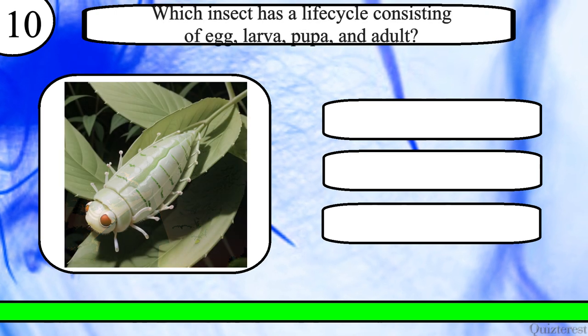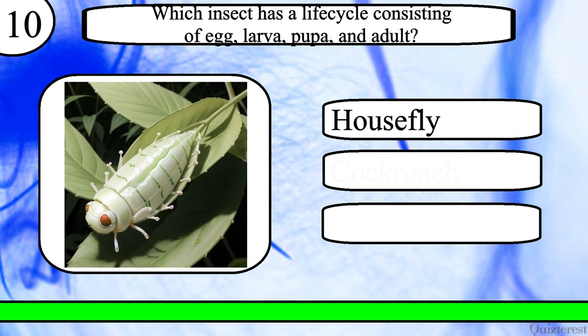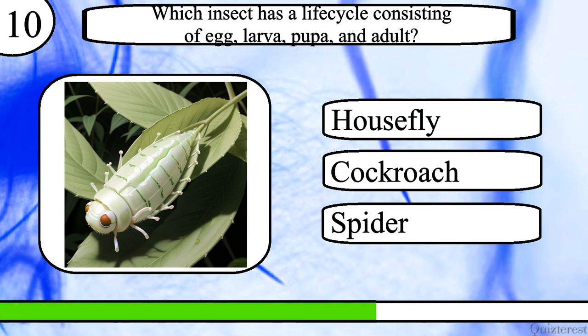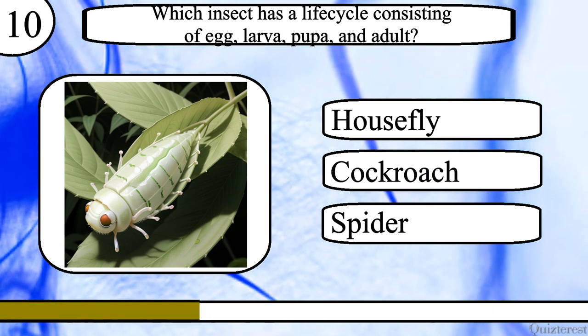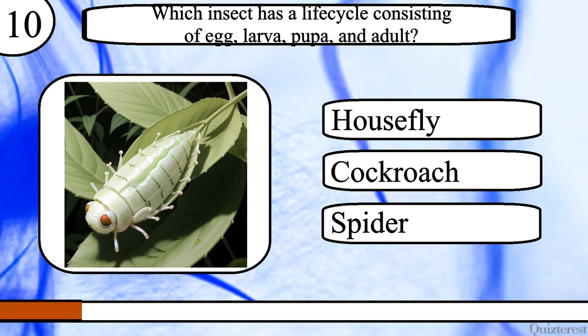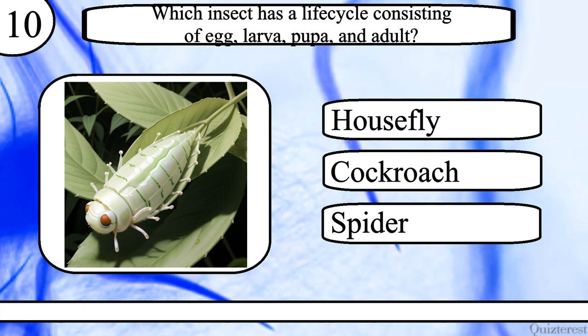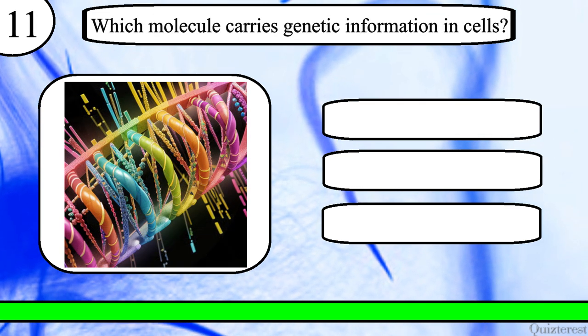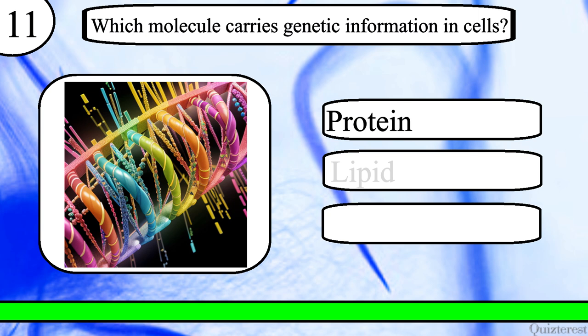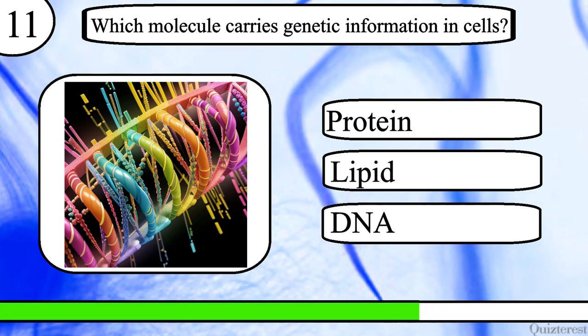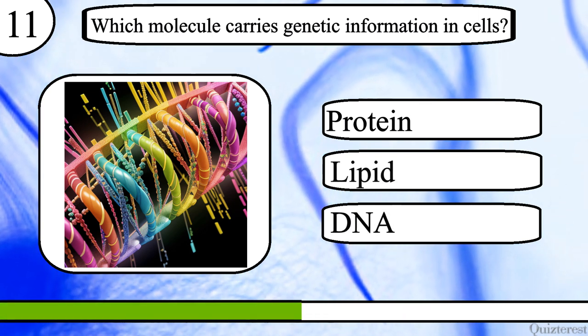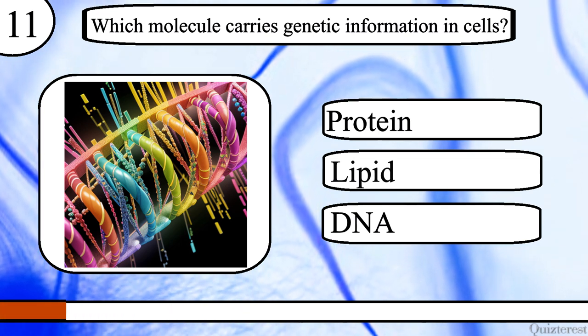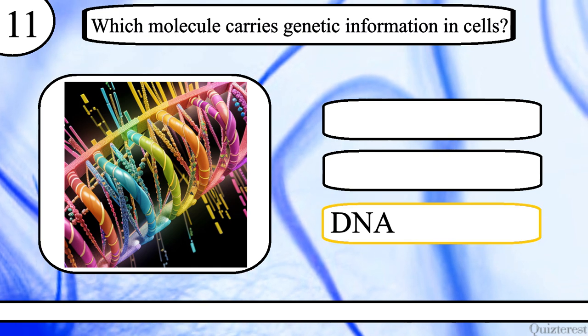Question 10. Which insect has a life cycle consisting of egg, larva, pupa and adult? Housefly, cockroach or spider? The correct answer is housefly. Question 11. Which molecule carries genetic information in cells? Protein, lipid or DNA? The correct answer is DNA.